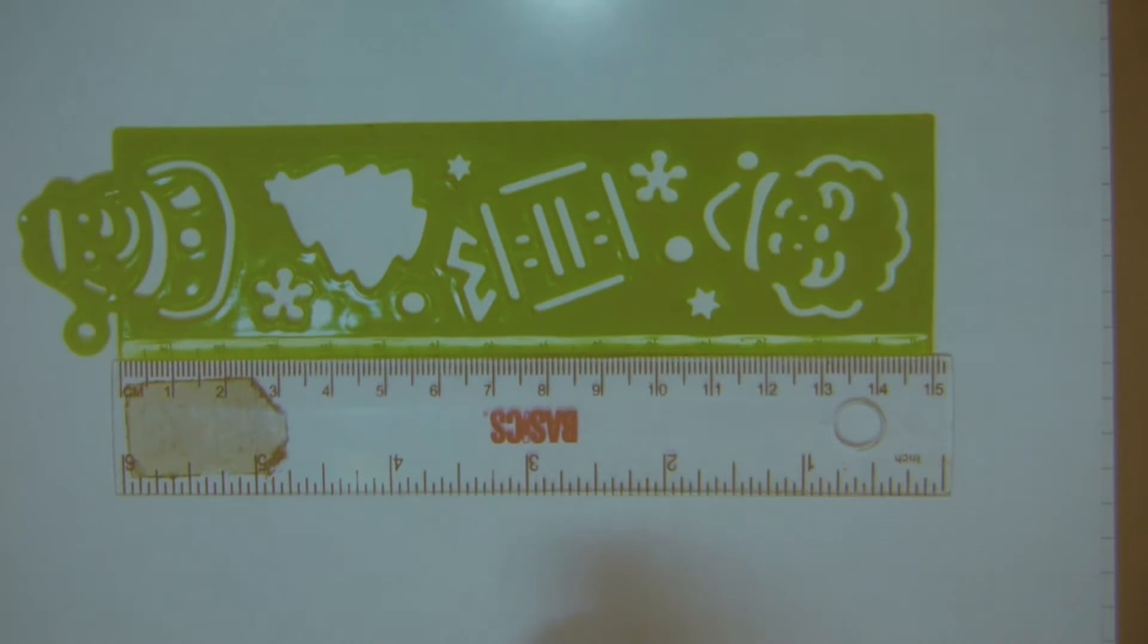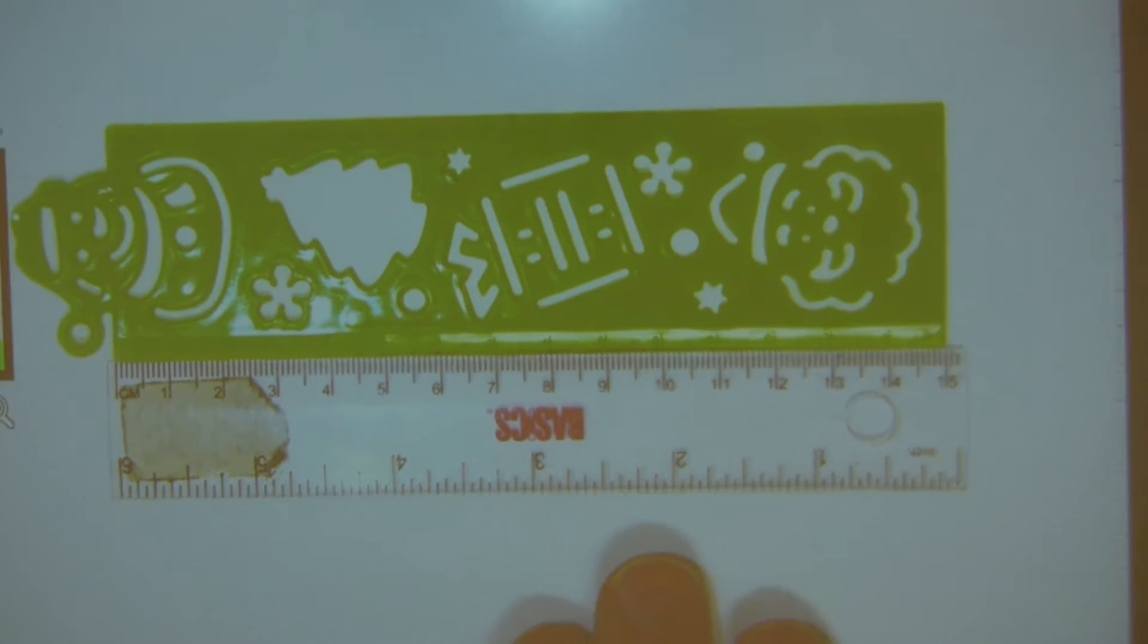Right over here, under the overhead, I have the exact same two rulers laid out, edge against edge, where the centimeters' edges meet. Let's zoom into this centimeter graduation here.